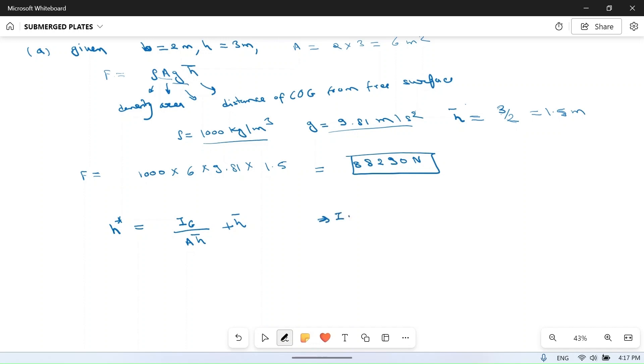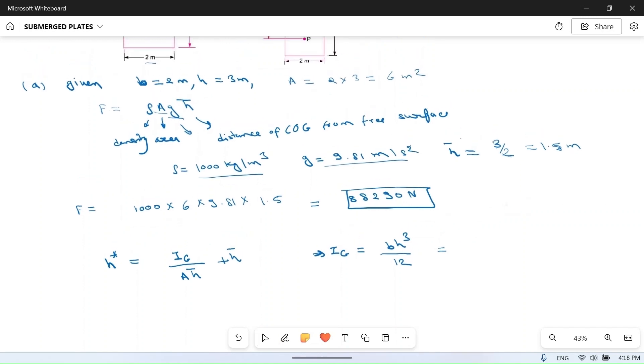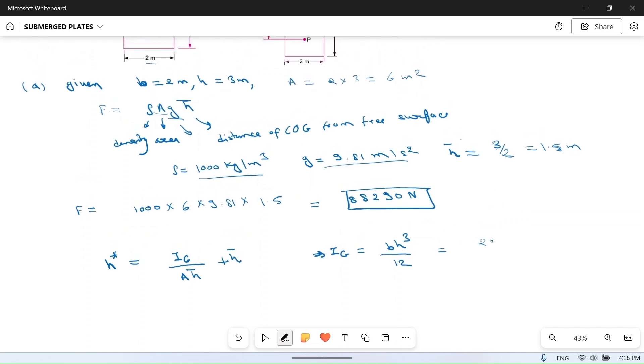What is Ig? Ig for rectangular surfaces is b·h³/12. So for rectangular surface it is b is 2 meters, so 2 into h is 3, 3 cube divided by 12, so it will be 54 divided by 12 equals 4.5 meter to the power 4.